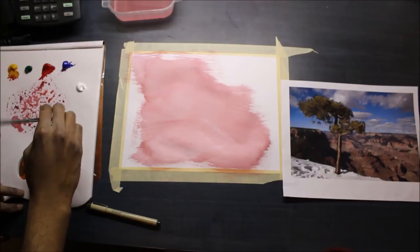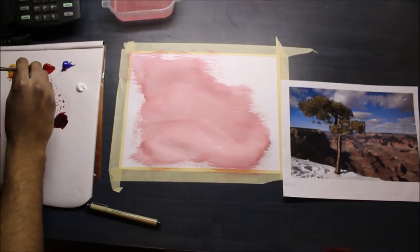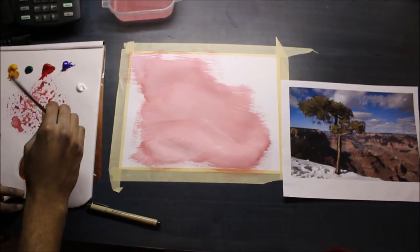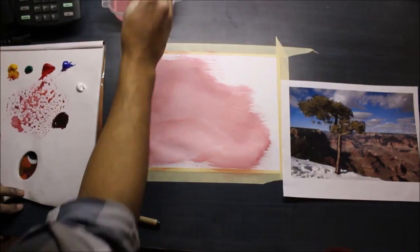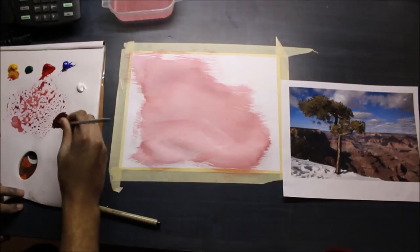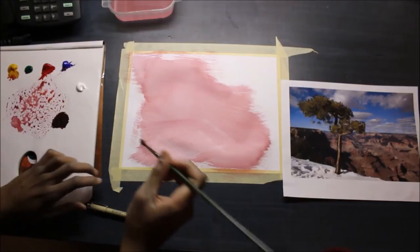So now I have my shadow color. Now this is where you exaggerate the form.